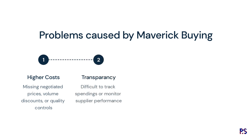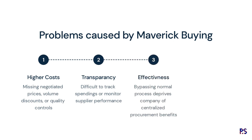Secondly, maverick buying can lead to a lack of transparency and accountability in the procurement process. When purchases are made outside of the normal process, it can be difficult for the company to track and manage spending, or monitor supplier performance. Thirdly, maverick buying can undermine the effectiveness of the procurement function as a whole, depriving the company of the benefits of a centralised procurement function, such as improved efficiency, cost savings, and better supplier relationships.